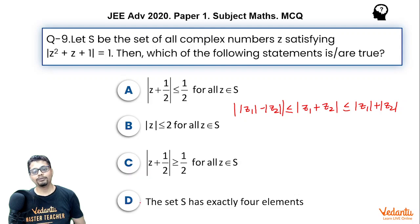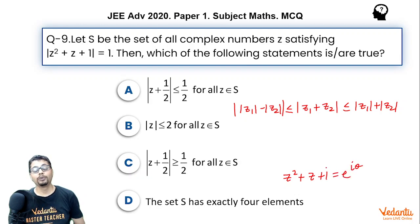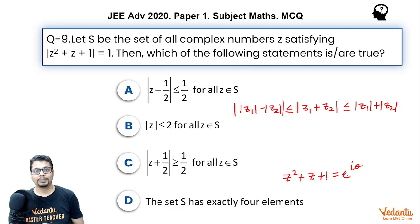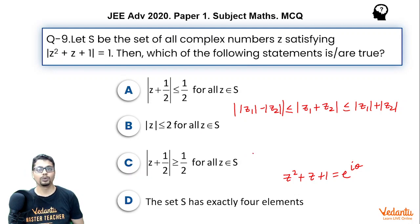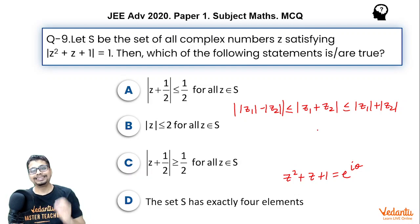First, commenting upon the fourth option: |z² + z + 1| = 1 essentially means z² + z + 1 = e^(iθ), because its modulus is 1. Now θ can take any value, say between -π (open) to π (closed). As θ varies, this equation gives different values of z satisfying it, meaning the set S has infinitely many elements. So option D is false.